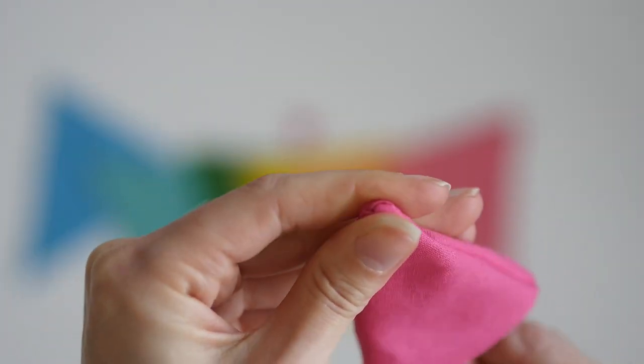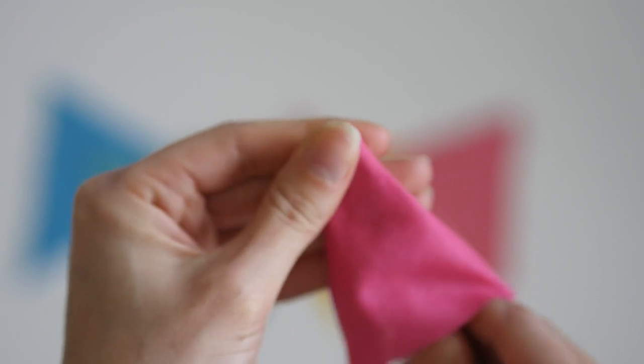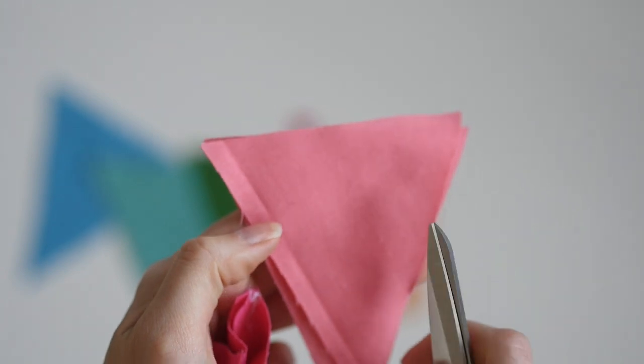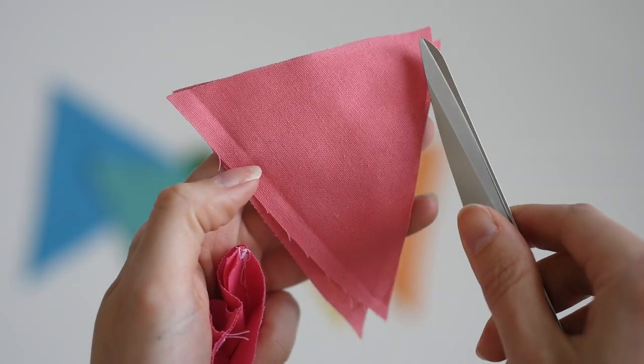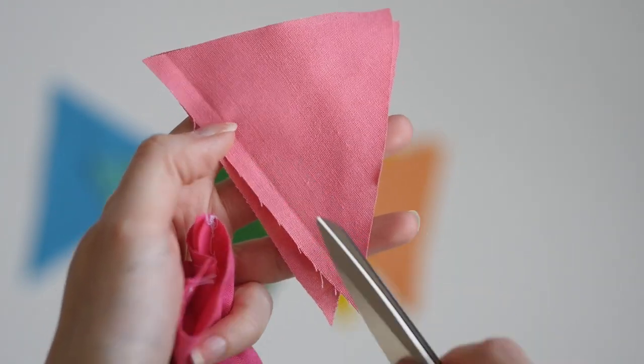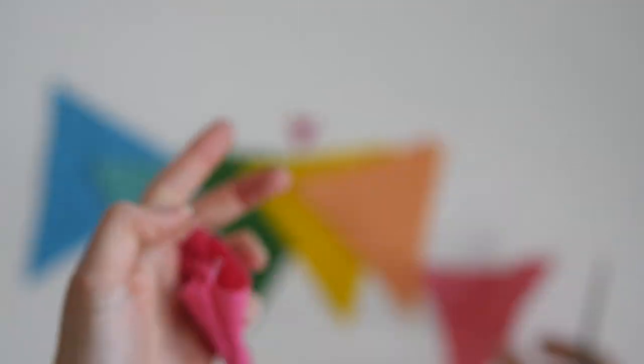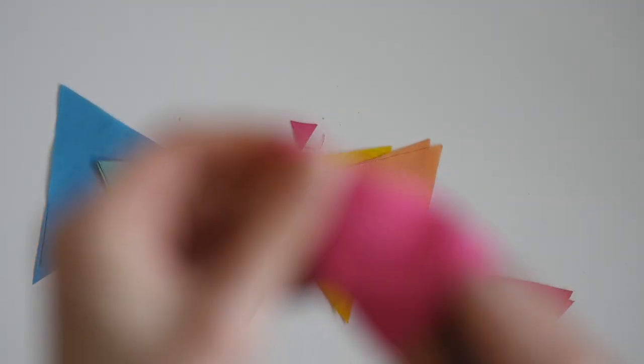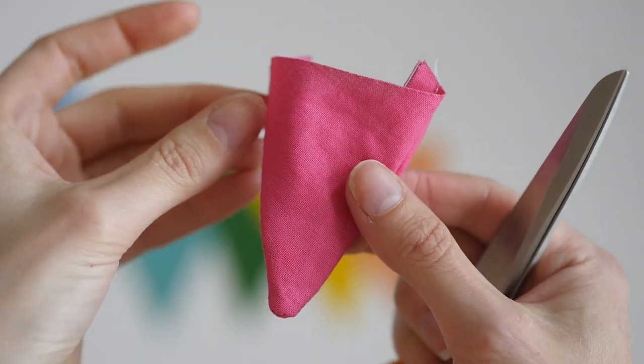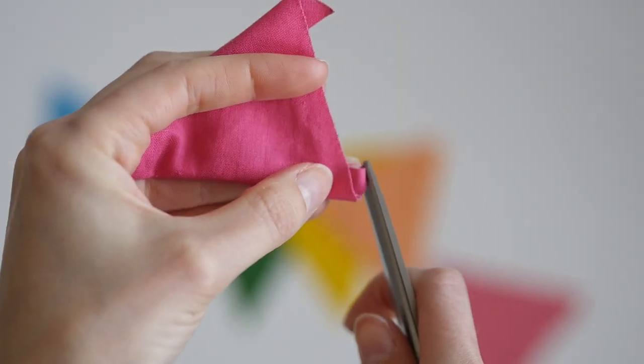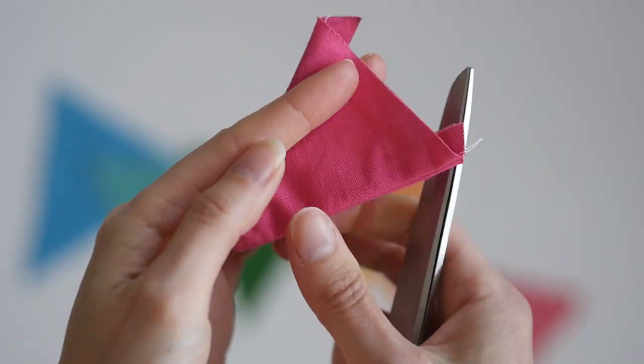By the way, if you want to copy my little mini flags, the size of the triangle is 9 centimeters across the top and I did 10 centimeters from the top to the point and then I just squared it off. Once you have poked out the end, this one still needs a little bit of work, but it should look something like this. Now you can give it a little press and once you've pressed it you can just chop those little triangles off the very top.